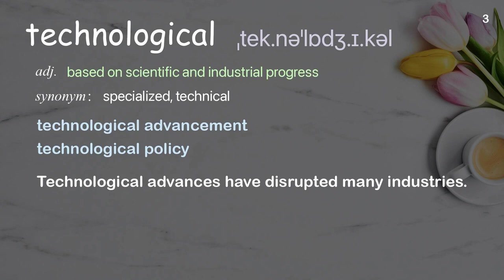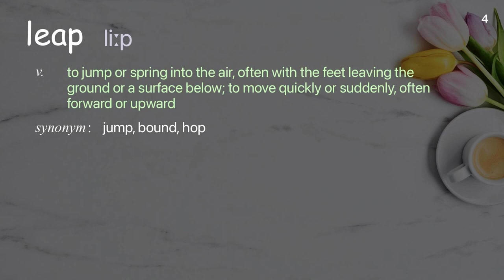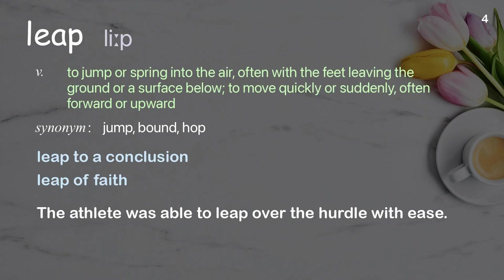Technological: based on scientific and industrial progress. Examples: technological advancement, technological policy. Technological advances have disrupted many industries. Leap: to jump or spring into the air, often with the feet leaving the ground, or to move quickly or suddenly forward or upward. Examples: leap to a conclusion, leap of faith. The athlete was able to leap over the hurdle with ease.